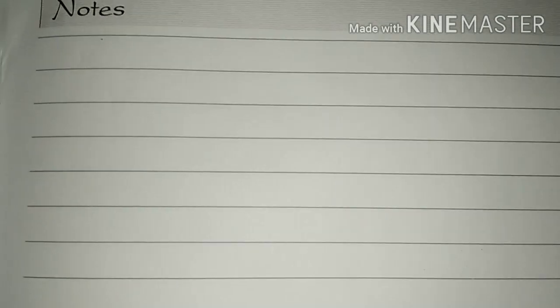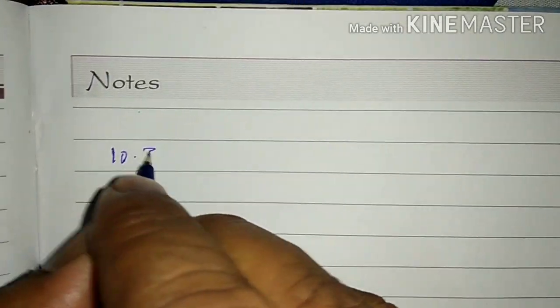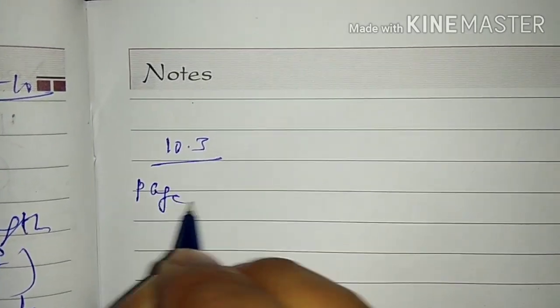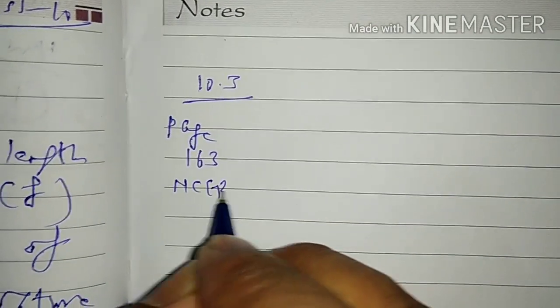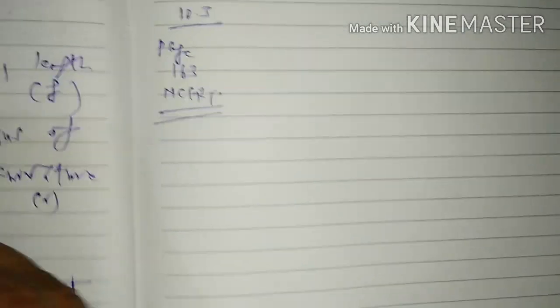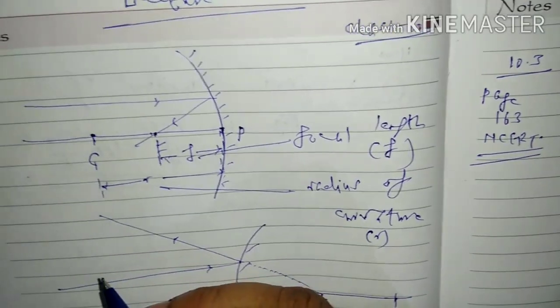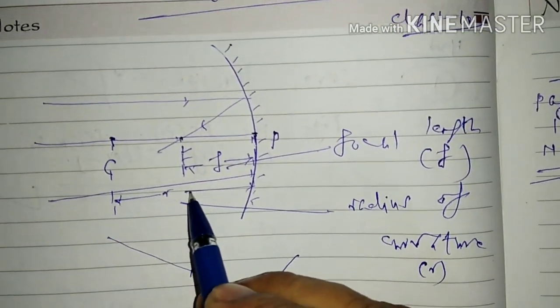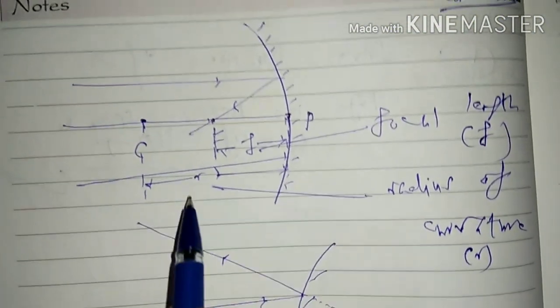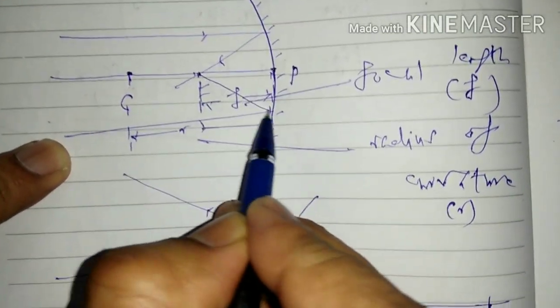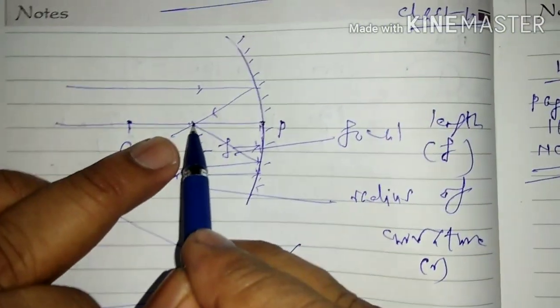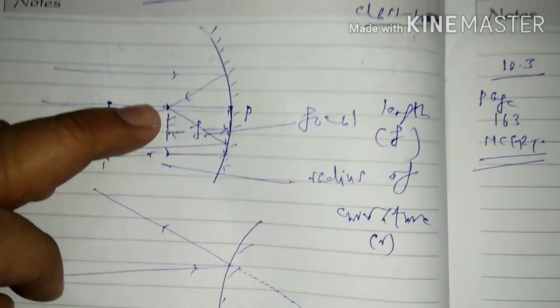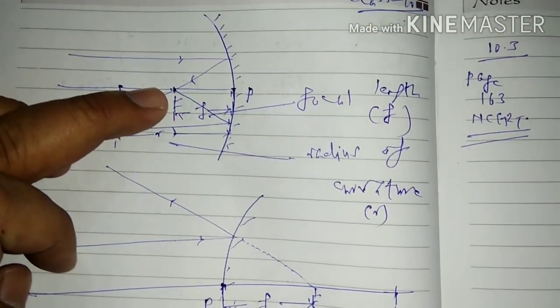I had promised that I shall explain each and every activity given in our NCERT textbook. Activity 10.3 on page 163: we take a concave mirror and put it towards the sun. If we take a sheet of paper and adjust it to and fro, we see that a point-size image of the sun forms on the page. The distance between this point-size image and the pole gives us the focal length, so with this activity we can roughly measure the focal length of a concave mirror.